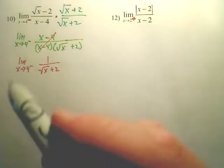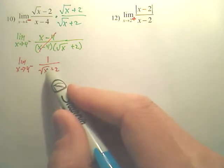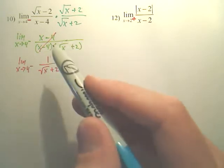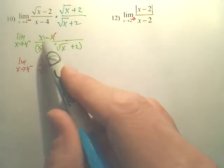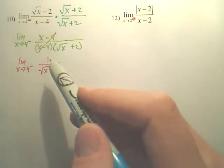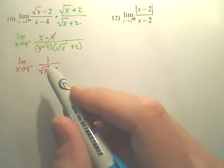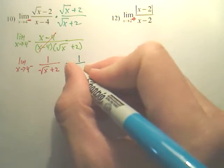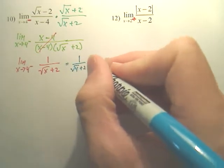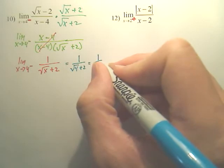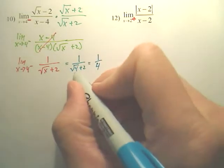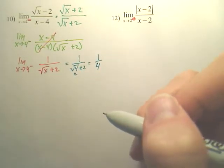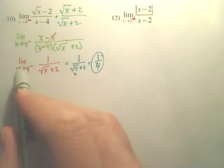Now, doing that, what that did is it created a new equation where there was a hole that got filled in. There was a hole here at 4, x equals 4, but now it got filled in, so we could actually find the limit. So all we do now is plug in 4. So 1 over the square root of 4 plus 2, which is 1 over 4, because that becomes 2.